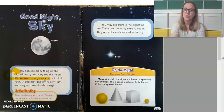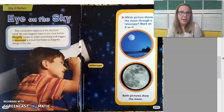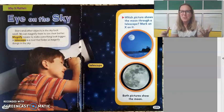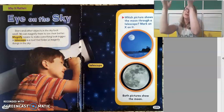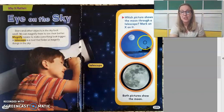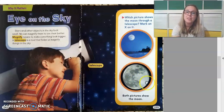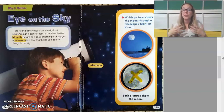All right, turn the page. 'Eye on the Sky: Stars and other objects in the sky look small when we're sitting down here on Earth, but we can magnify them to see them better. Magnify means to make something look bigger — like when we've used a hand lens in our classroom. A telescope is a tool that helps us magnify things in the sky.' Here we have two pictures and it says which one shows the moon through a telescope. The one where the moon is very large has been magnified, so I'm going to put the X on that one — that is the moon shown through a telescope.